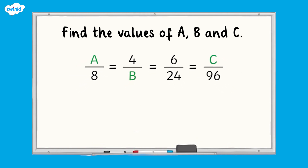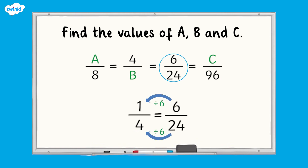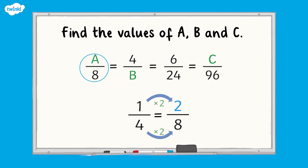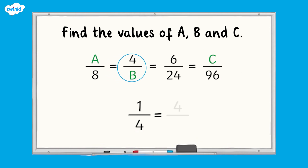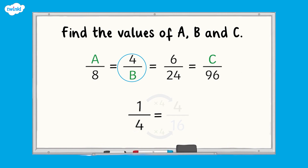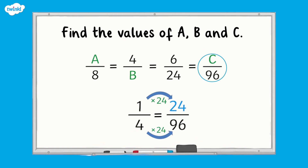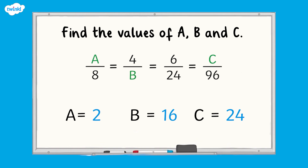The complete fraction we have is six twenty-fourths. Six twenty-fourths in its simplest form is one quarter, as we can divide both the numerator and the denominator by 6 to give us one quarter. Therefore all the fractions in this question must also be equivalent to one quarter. If we are finding an equivalent fraction to one quarter where the denominator is 8, the numerator would be 2, as 4 multiplied by 2 equals 8 and 1 multiplied by 2 equals 2. If the numerator is 4, the denominator must be 16, as 1 multiplied by 4 equals 4 and 4 multiplied by 4 equals 16. If the denominator is 96, the numerator would be 24, as 4 multiplied by 24 equals 96 and 1 multiplied by 24 equals 24. So A equals 2, B equals 16 and C equals 24.